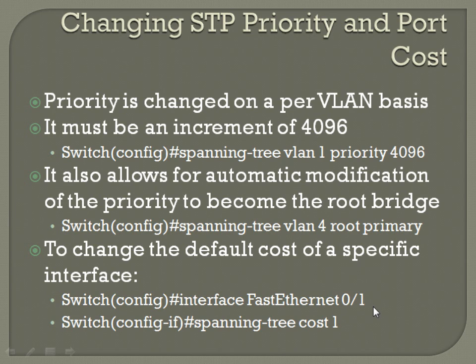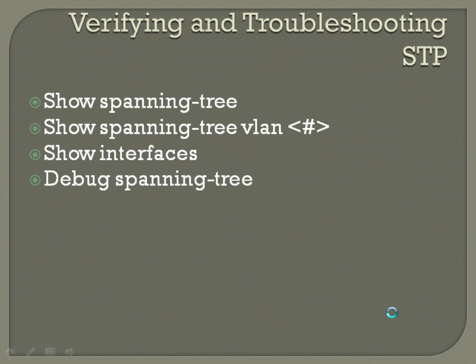For verifying and troubleshooting STP, use the 'show spanning-tree' command. You can also use 'show spanning-tree VLAN [number]' to look at spanning tree for a particular VLAN, since separate instances run per VLAN. Use 'show interfaces' as well, and if you need deeper detail, 'debug spanning-tree'. Always remember to run 'undebug all' when done, because debug commands consume considerable router and switch resources, and running multiple debugs can cause detrimental performance.